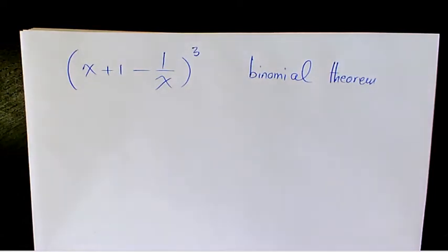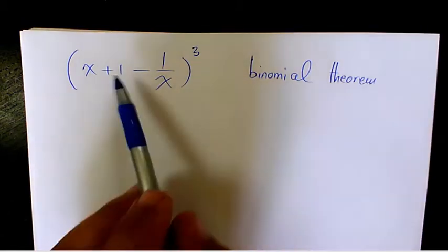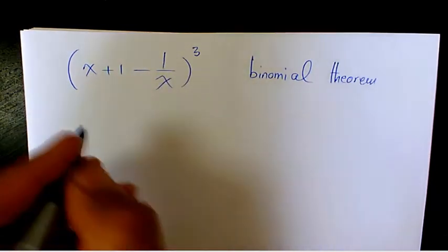What's up guys, this is Masi, welcome to another video. In this video I want to show you how to expand (x + 1 - 1/x) to the power of 3 using the binomial theorem. We need to use the binomial theorem, which means we need two terms, but here in this bracket we have three terms: x, 1, and negative 1/x. So I need to combine two of them — I'll take (x + 1) as the first term and (-1/x) as the second term.